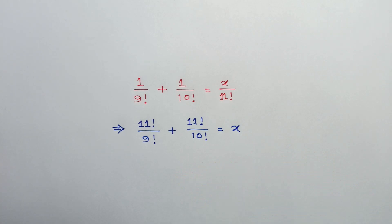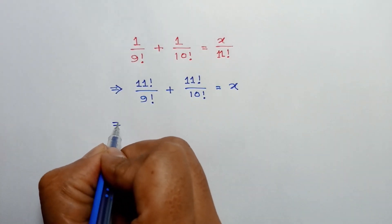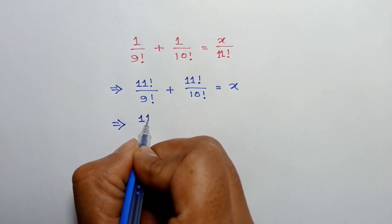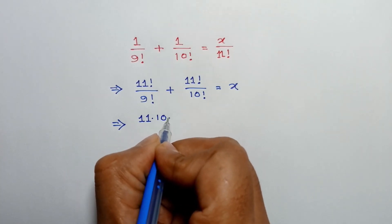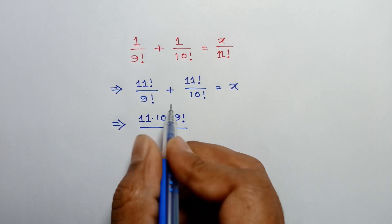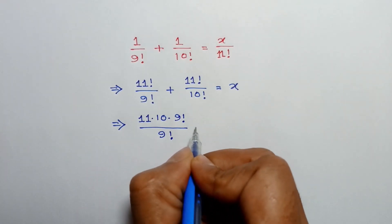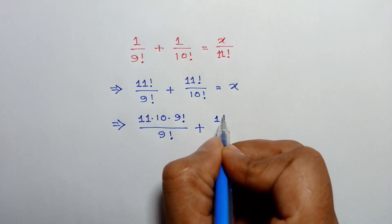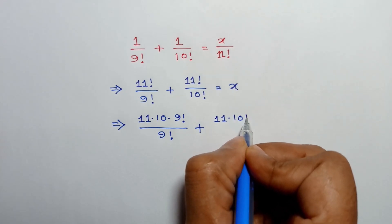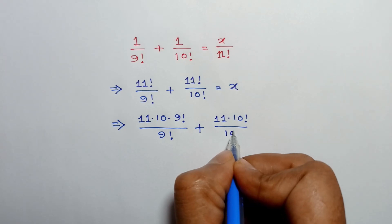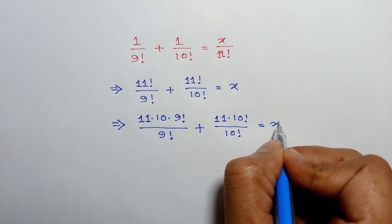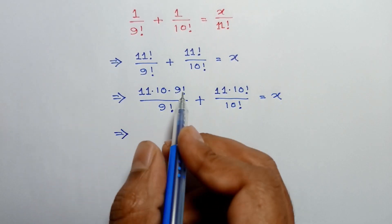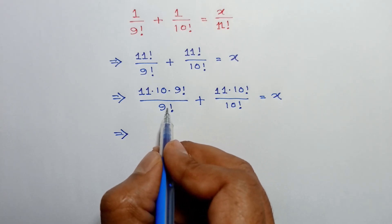So it will remain x. Now, 11 factorial can be written as 11 times 10 times 9 factorial over 9 factorial, plus 11 factorial is 11 times 10 factorial over 10 factorial, is equal to x. The 9 factorial and 9 factorial will cancel out.